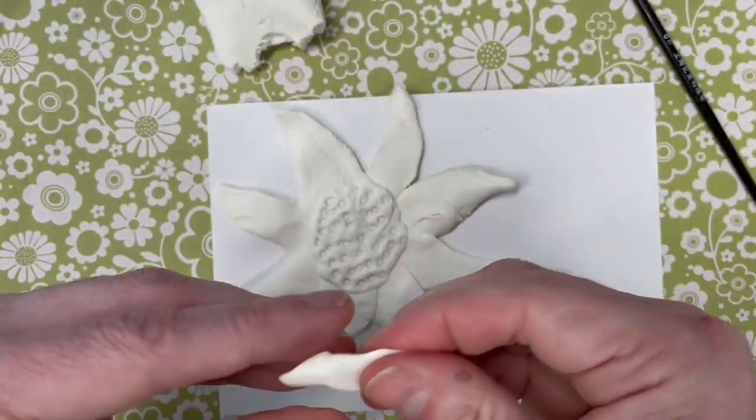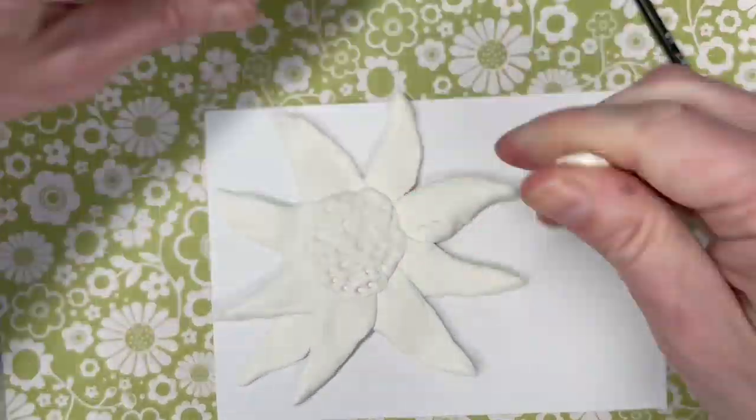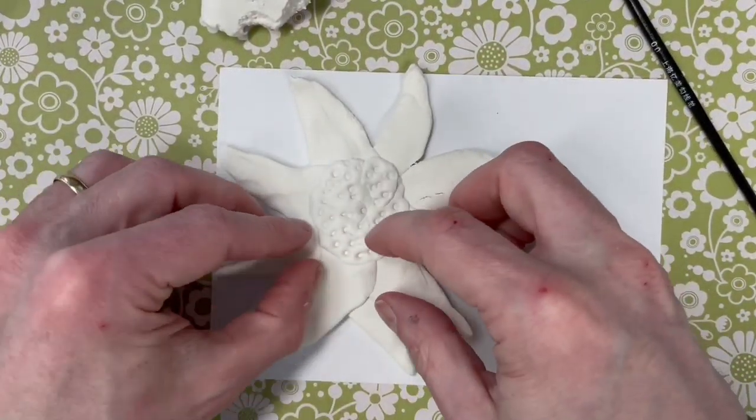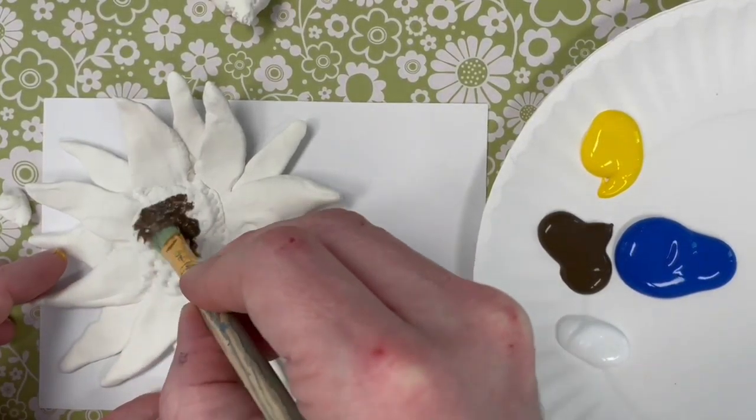And then once we have that done, what we'll do is layer some of the smaller petals underneath of those, so they're still movable. And then we're going to paint.